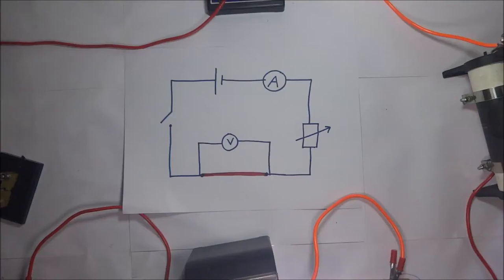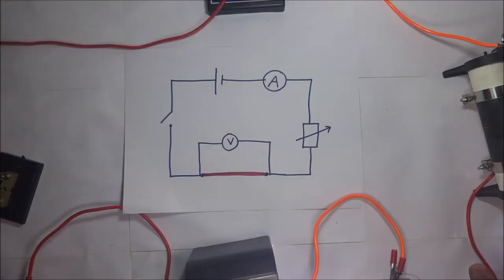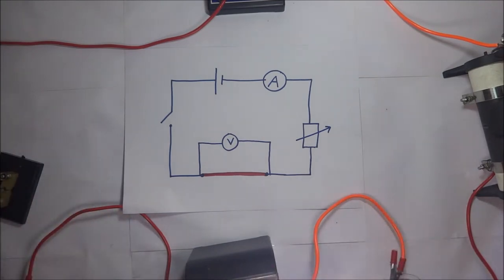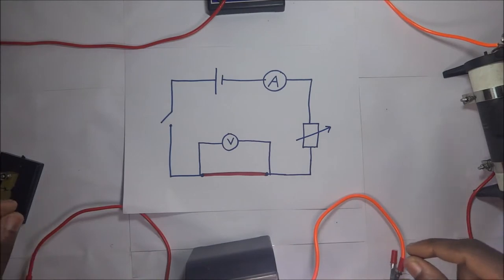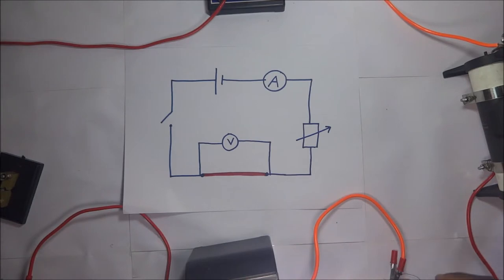In 1826, George Simon Ohm, a German physicist, carried out experiments with different metal wires. He was measuring the potential difference across each of those wires and also measuring the current going through them. He concluded that the ratio of the potential difference between the ends of the conductors to the current flowing through each wire was constant. This relationship between potential difference and current is what we call Ohm's law.